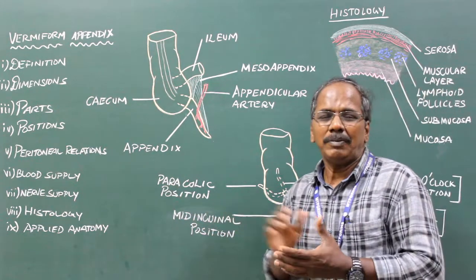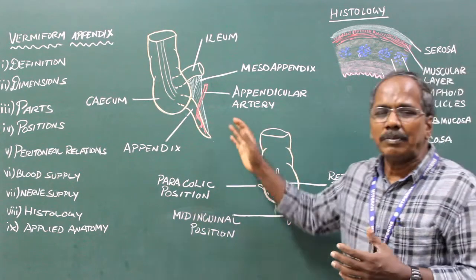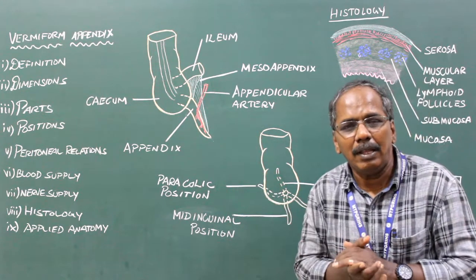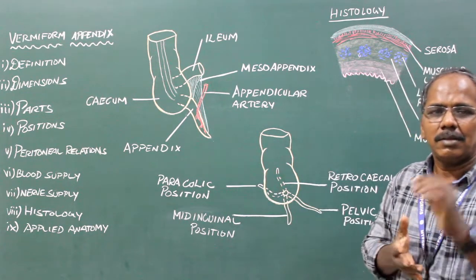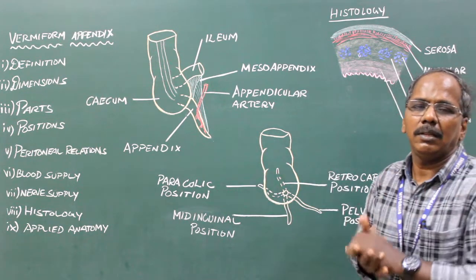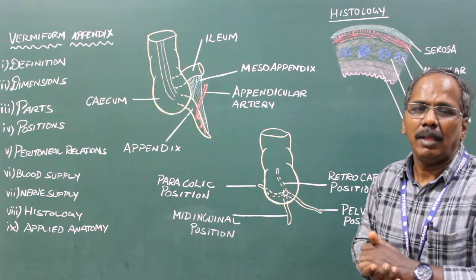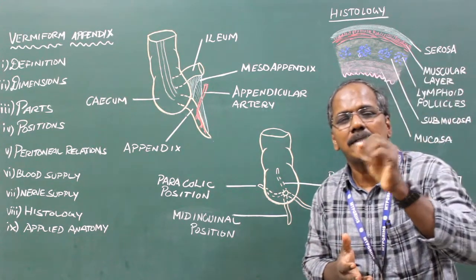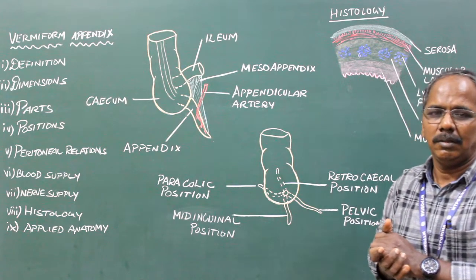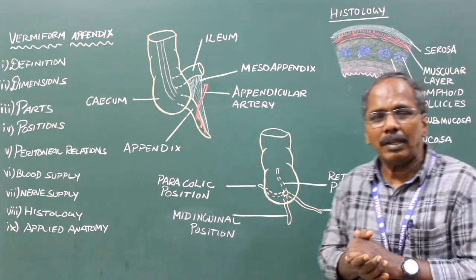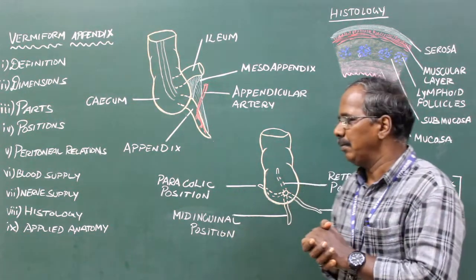Nerve Supply. The appendix has both sympathetic and parasympathetic nerve supply. Sympathetic supply is derived from the T10 spinal segment. Parasympathetic supply is by the right and left vagus nerve.